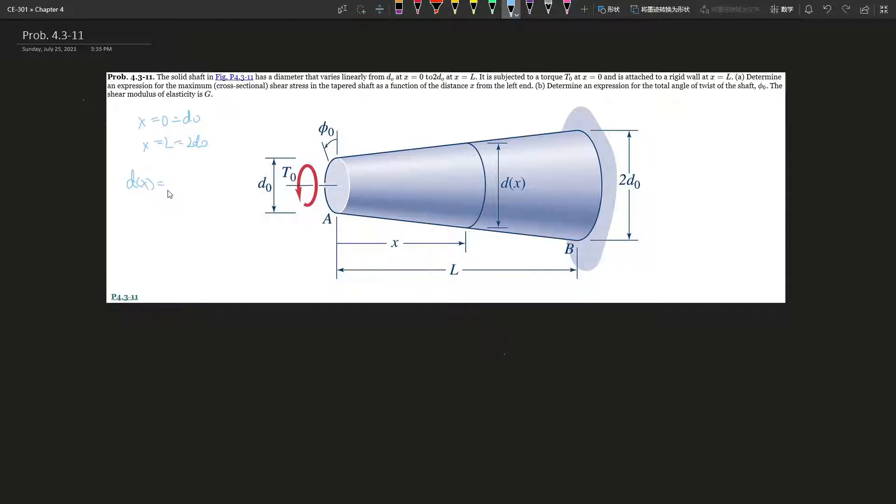So I sort of just wrote x over L times d0 plus L minus x divided by L times 2d0. Let me check if that works. So if x is 0, this is 0, and L minus x is L over L which is 1 times d0. If x equals L, it's 2 times 2d0 minus 0. Okay, perfect.